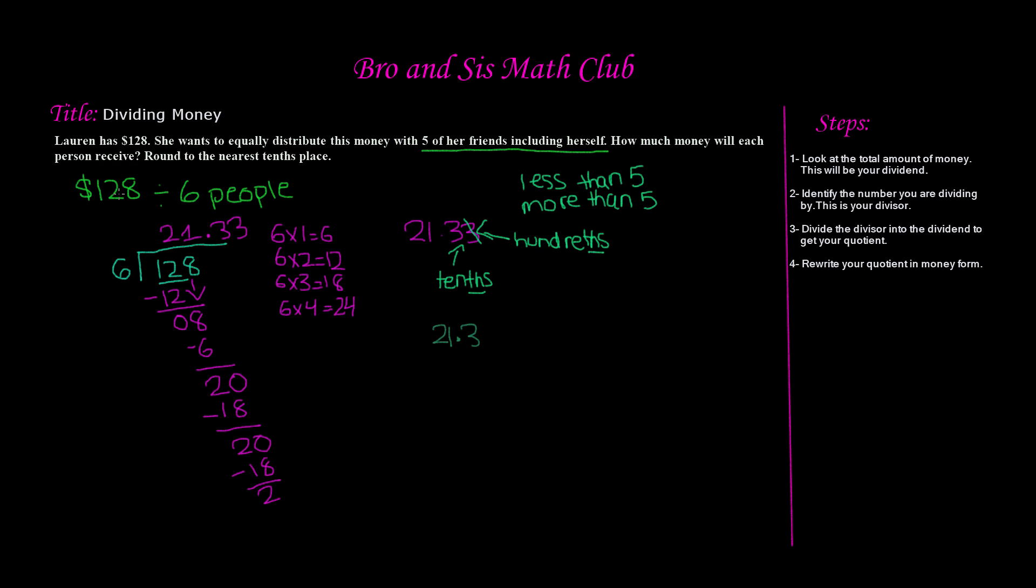So now if we go back to our example, our word problem, we have our answer, which is 21.3. Now if you look at step 4, it says rewrite your quotient in money form, which is just add a dollar sign and write 21.3, or it's the same thing as $21.30. So this is our answer. That means each person will receive $21.30.